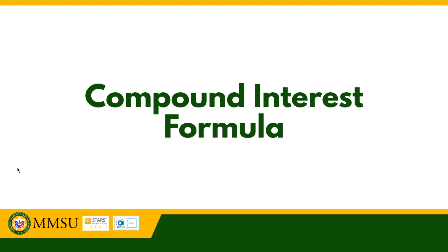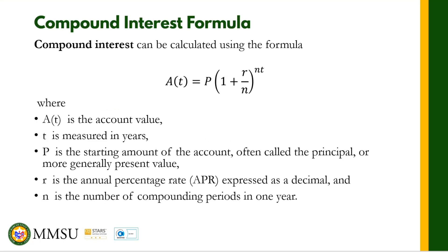So what is the formula for compound interest? Compound interest can be calculated using the formula: A(t) = P times (1 + r/n) raised to nt. Here, A is the account value after time t, P is the principal or starting amount, r is the nominal rate, n is the number of compounding periods in one year, and t is the total number of years.